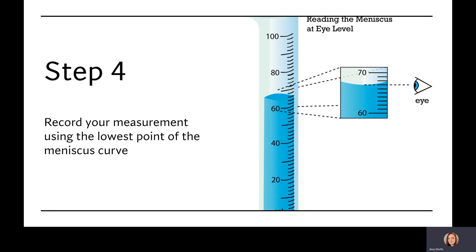Look at the horizontal lines on the side of the cylinder and find which line the meniscus is closest to. Then determine the increments of measurement on the tube. For example, if the area between the 60 millimeter mark and the 70 millimeter mark is divided into 10 segments, each segment represents 1 millimeter.